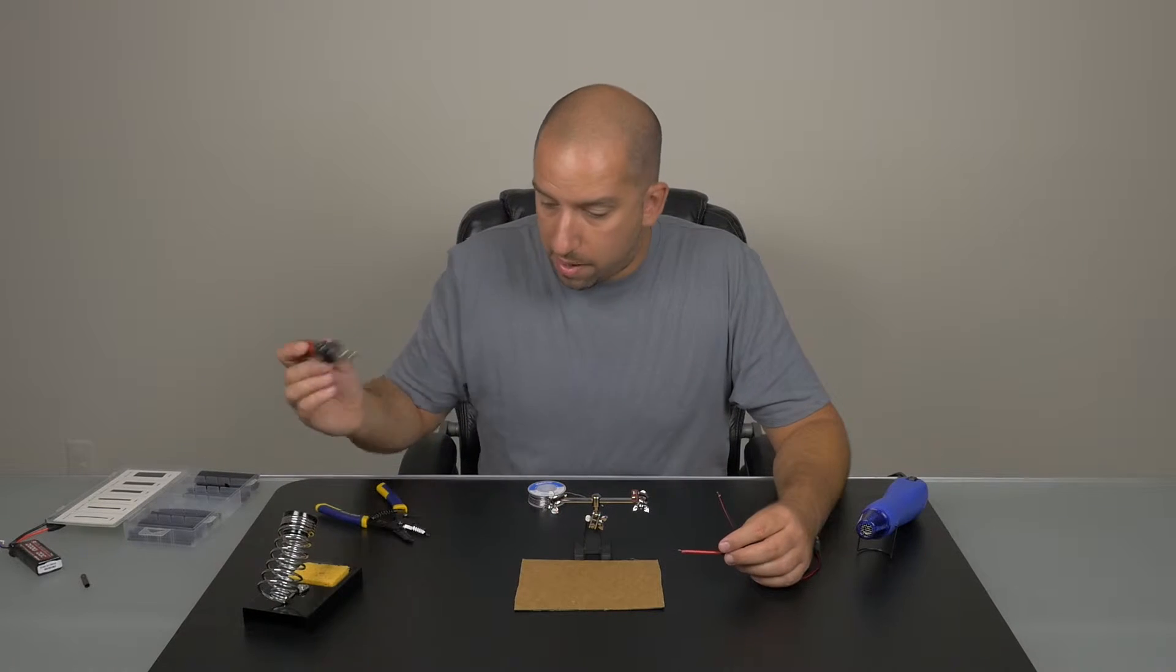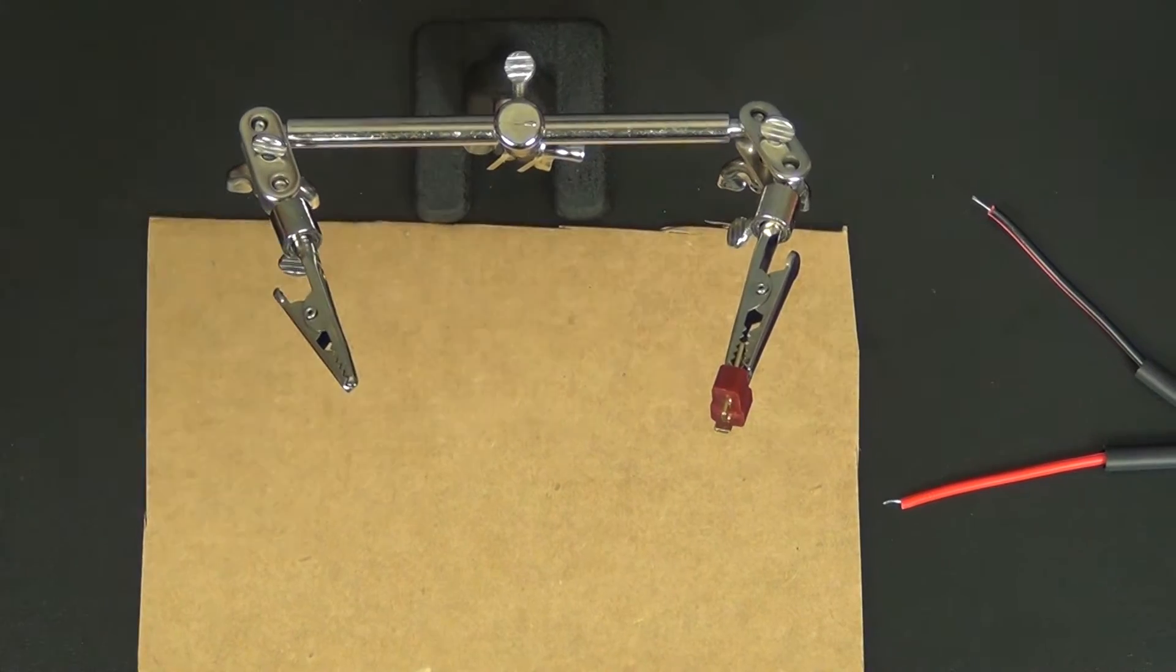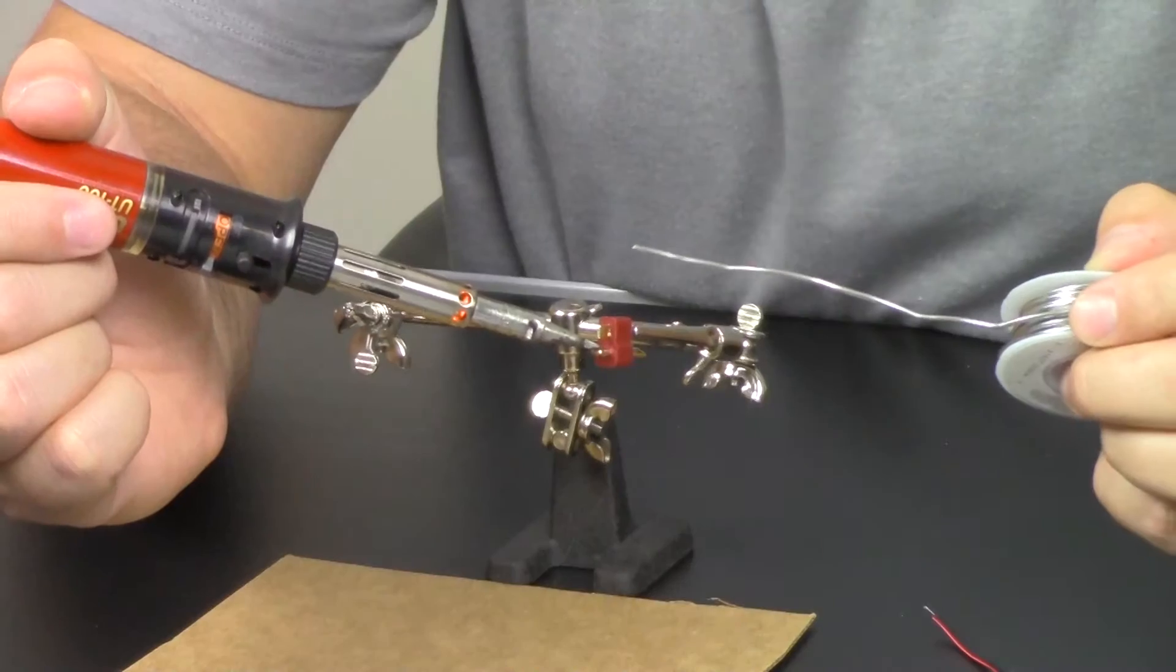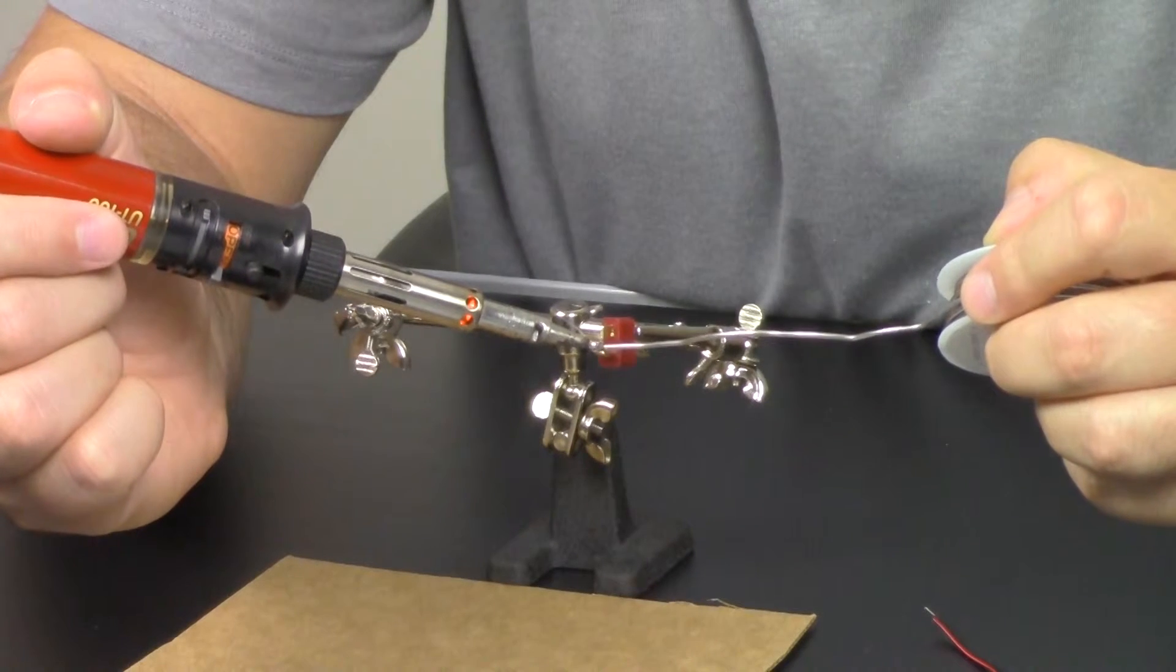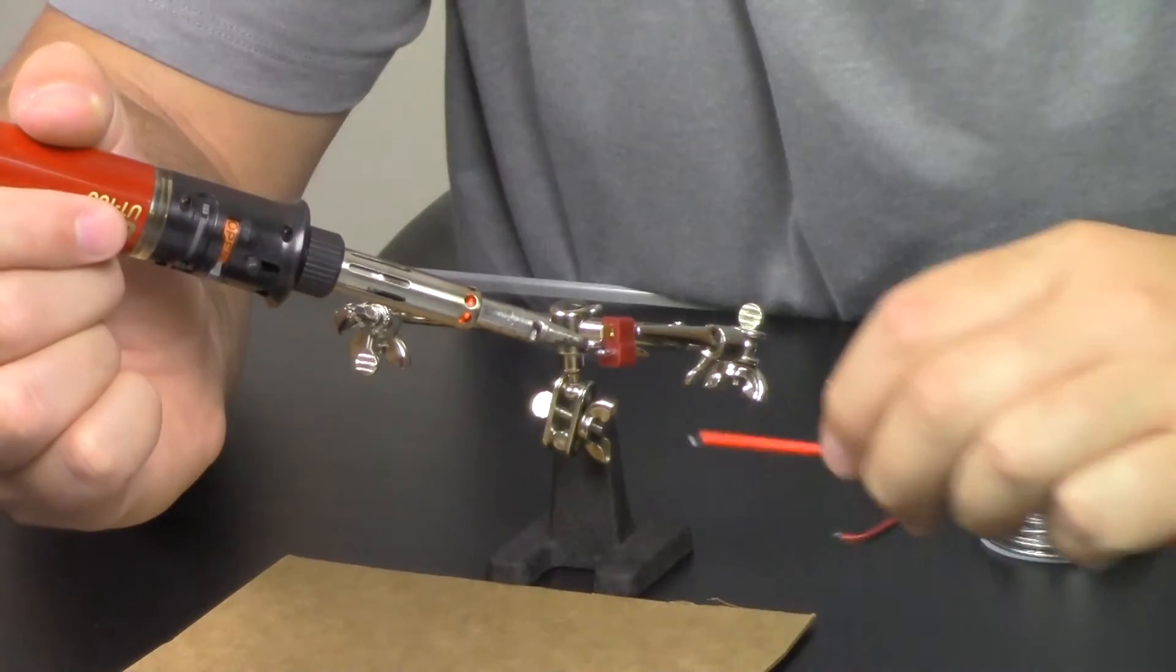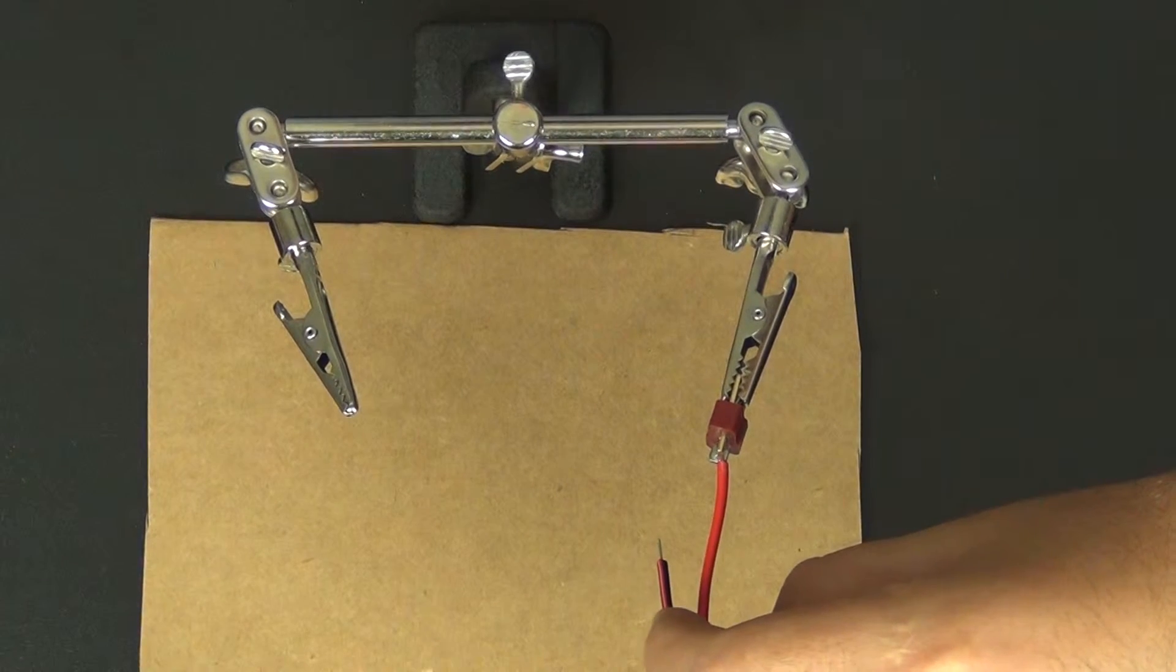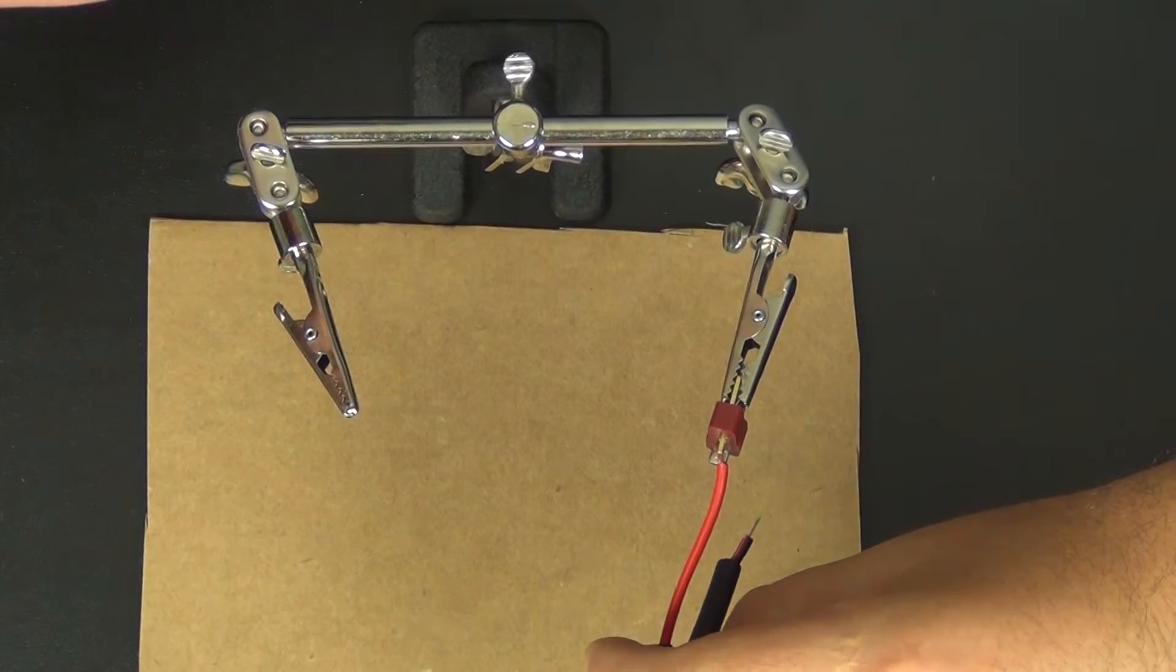And what we're going to do is take our soldering iron, give it a little clean, make sure that we have a clean tip. We're going to pull out our rosin core solder and we're going to get in here and heat up the terminal just a little bit. Now I am by no means an expert solderer. Got a nice connection.